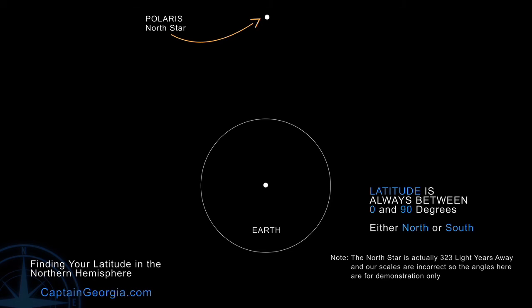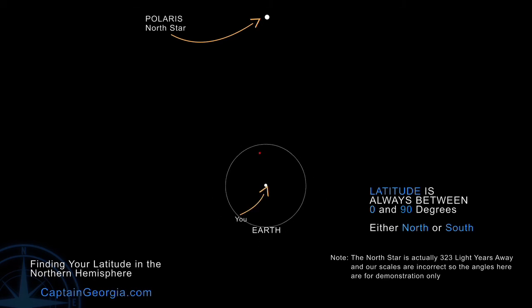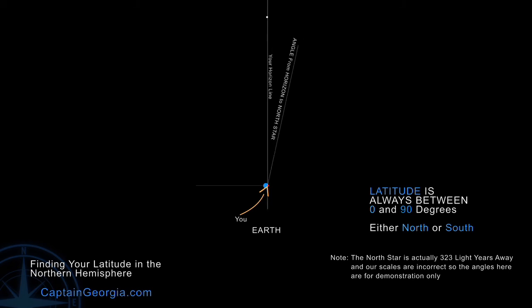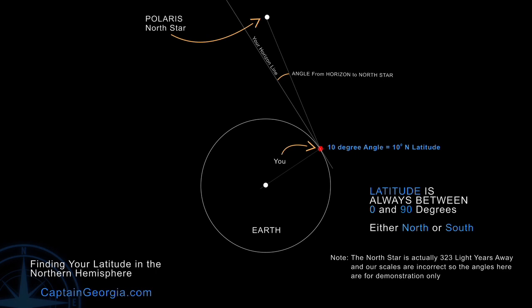So if we sneak the Earth down a little bit and take a better look at it, you get a better idea of reality — what it would look like. But again, zero degrees latitude, because the North Star is at zero degrees from our horizon. So this is how we find our position going from north to south, so we can figure out where we are on the globe — finding your latitude in the Northern Hemisphere.